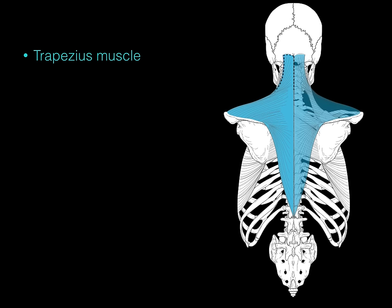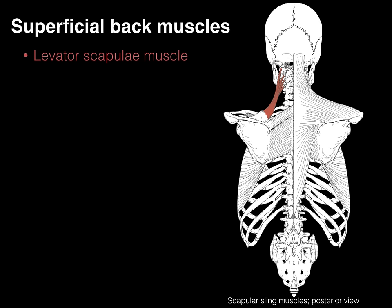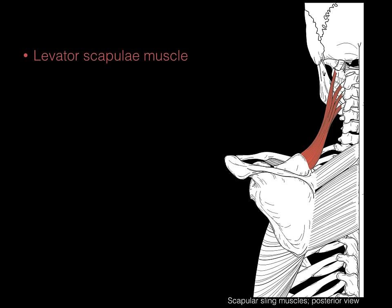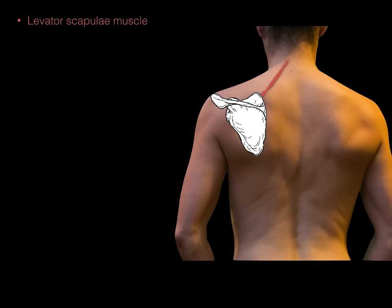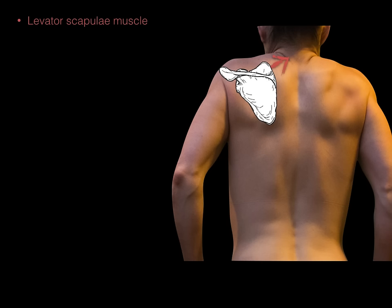Now let's dissect the trapezius out of the way and look deep to it — there's the levator scapulae. The attachments of the levator scapulae are from the transverse processes of C1 to C4; the muscle then spirals down to insert at the superior angle of the scapula. The action of this muscle is to pull the scapula up — to elevate the scapula — hence the name levator scapulae.